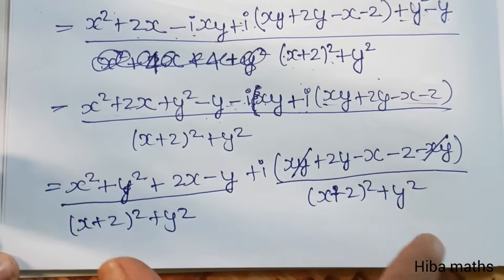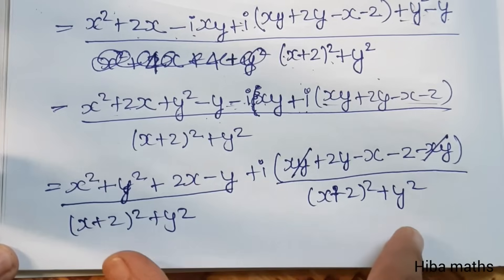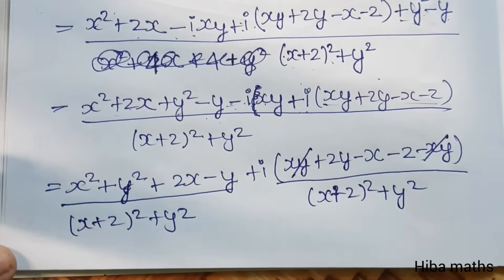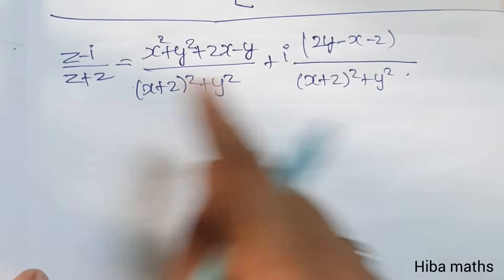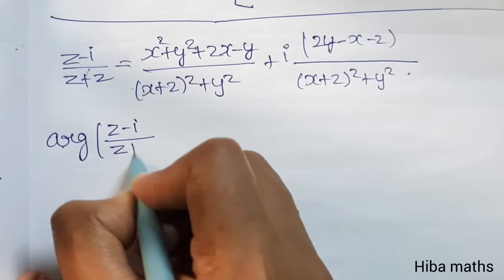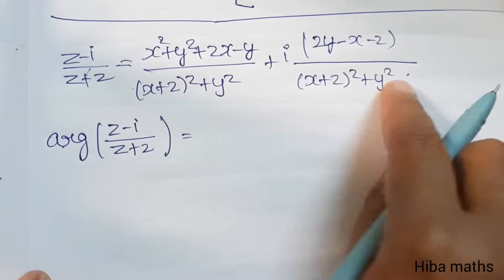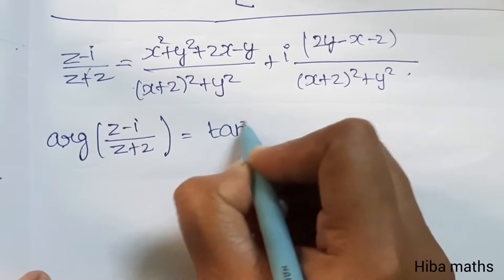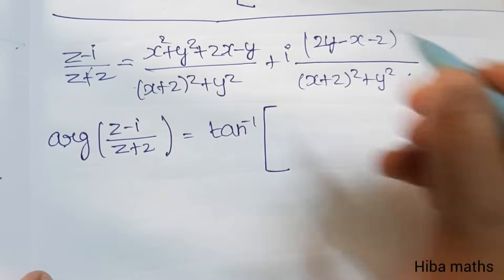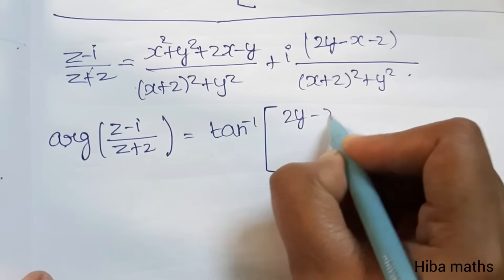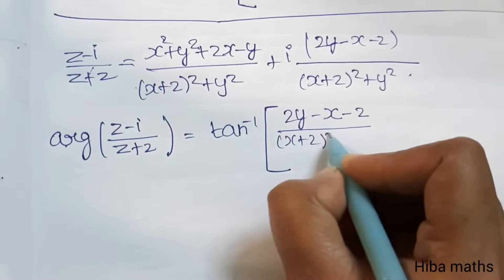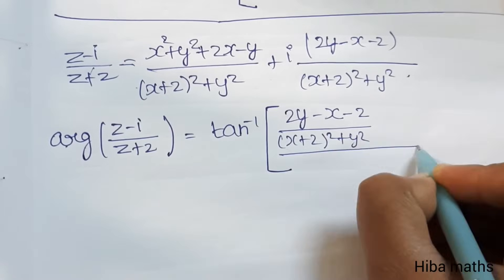Now we can convert the argument into tan inverse. The argument of a complex number is tan inverse of (imaginary term divided by real term). So the argument equals tan inverse of (2y minus x minus 2) divided by (x square plus y square plus 2x minus y), since the common denominator cancels out. This argument is equal to pi by 4.